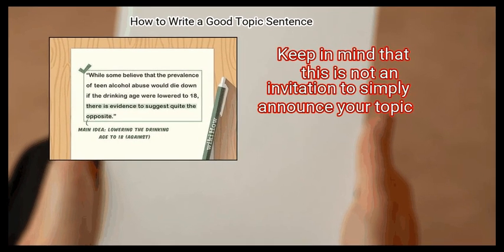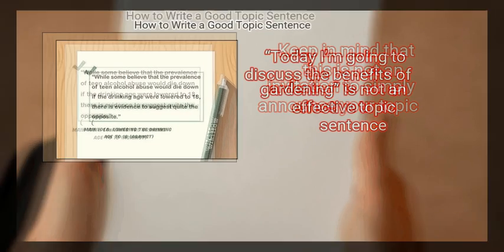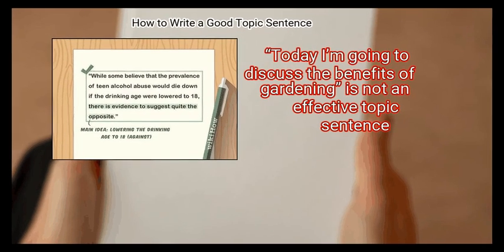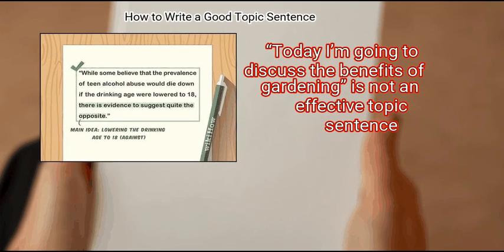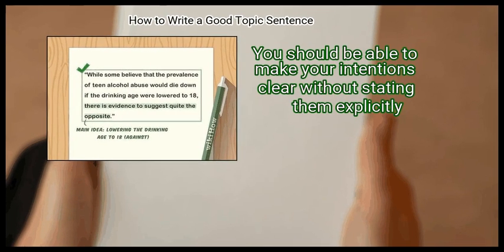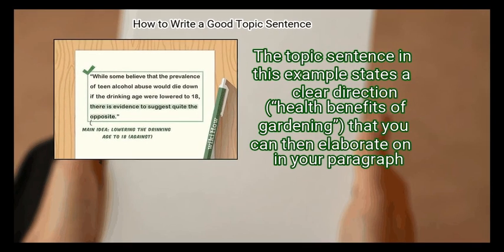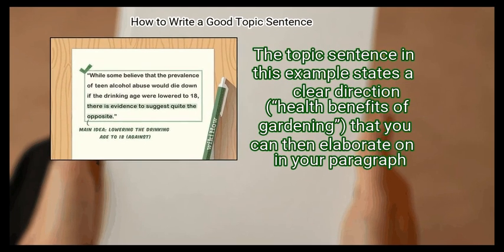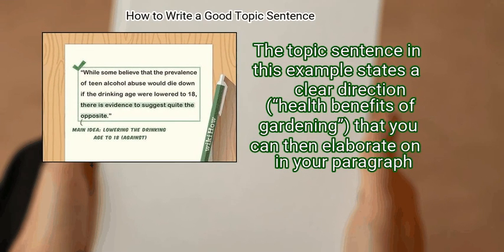Keep in mind that this is not an invitation to simply announce your topic. 'Today I am going to discuss the benefits of gardening' is not an effective topic sentence. You should be able to make your intentions clear without stating them explicitly. A more effective topic sentence states a clear direction, such as 'health benefits of gardening,' that you can then elaborate on in your paragraph.